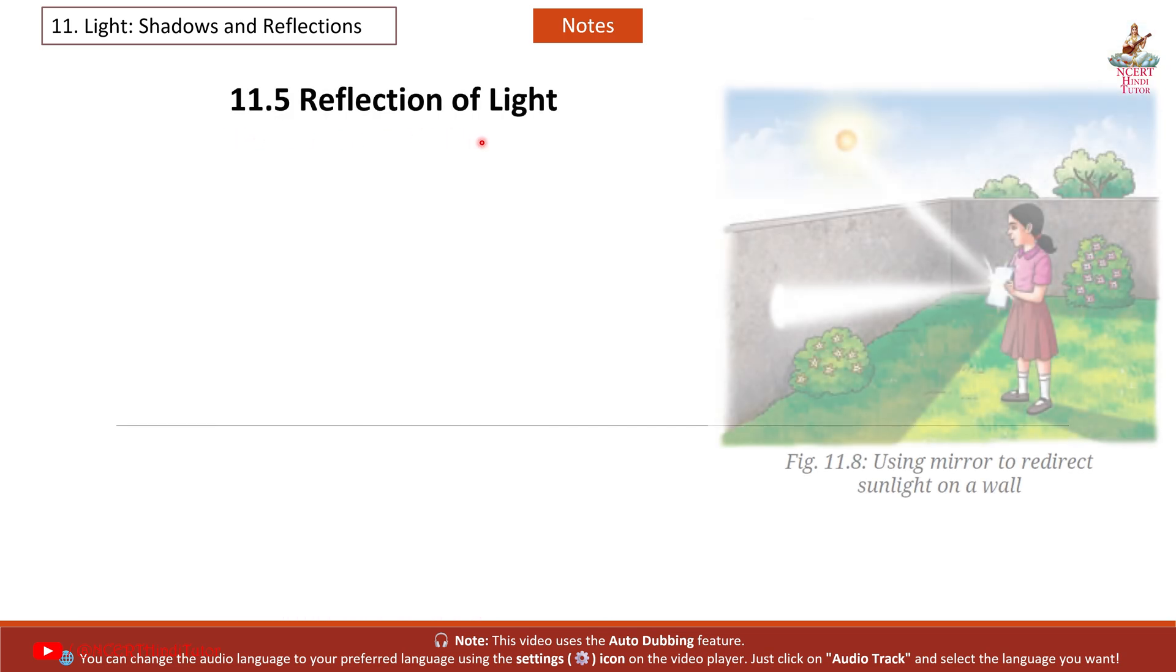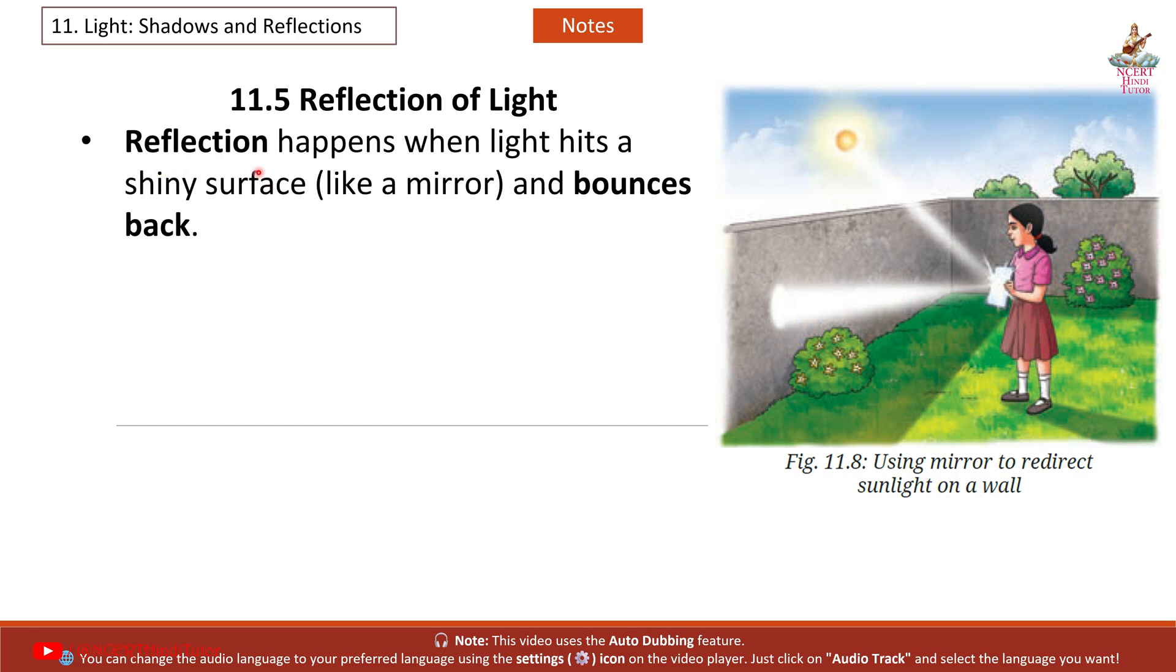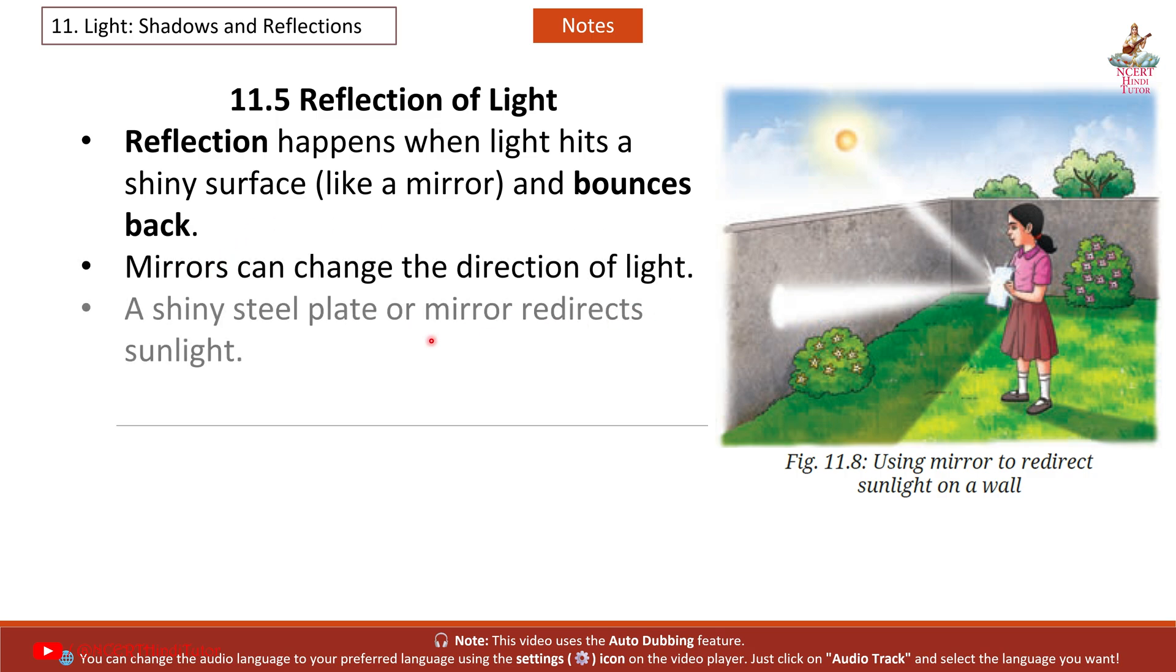11.5 Reflection of light. Reflection happens when light hits a shiny surface like a mirror and bounces back. Mirrors can change the direction of light. A shiny steel plate or mirror redirects sunlight. This is why you see a light spot reflected onto a wall.